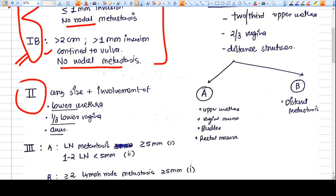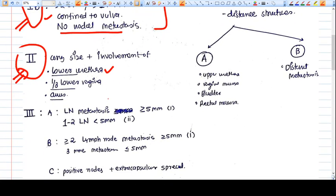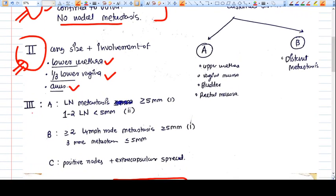In Stage 2, any size of tumor with the involvement of lower urethra, lower one-third of the vagina and anus, it will be called Stage 2.